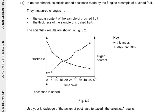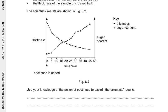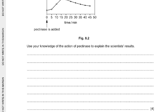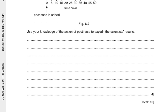In an experiment, scientists added pectinase made by the fungi to a sample of crushed fruit. They measured changes in the sugar content and the thickness of the crushed fruit sample over 50 minutes. The thickness is decreasing and the sugar content is increasing. Use your knowledge of the action of pectinase to explain the results. Pectinase digests pectin, which releases the sugar from the cells, causing the sugar concentration to increase. Pectin makes the solution thicker, so when it is digested the thickness decreases.